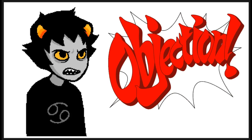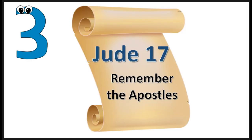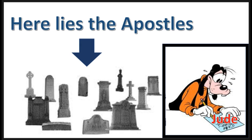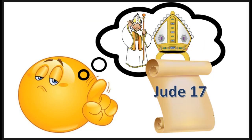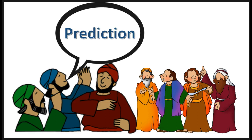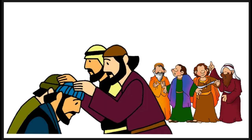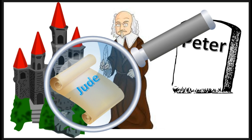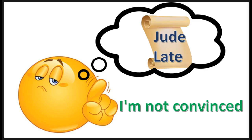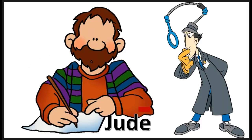The third reason given for a late date of Jude is that Jude verse 17 tells the readers to remember the Apostles, which indicates that the time of the Apostles has passed. The response is, Jude verse 17 does not necessitate a late date interpretation. Jude is simply referring to apostolic predictions, and he seems to have a specific prediction in mind — asking his readers to remember instructions received in conversation from a past apostolic visit, not a literary work.